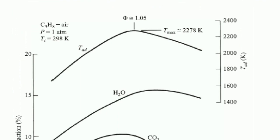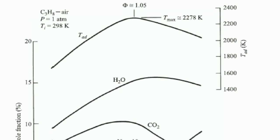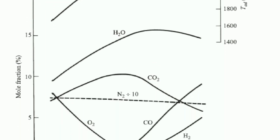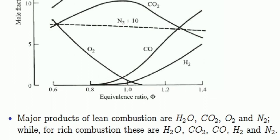This is for C₃H₈ propane where pressure is 1 atmosphere and temperature is 298 Kelvin, equivalence ratio 1.05, Tmax 2278. The y-axis defines mole fraction in percentage and the x-axis defines the equivalence ratio.